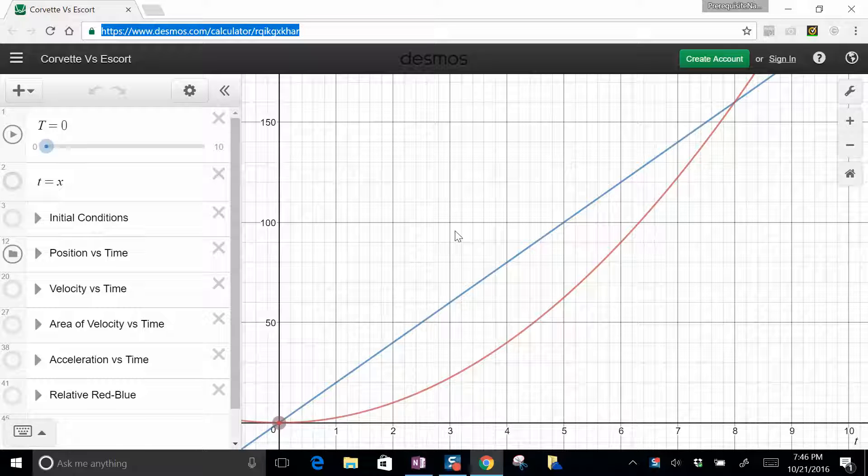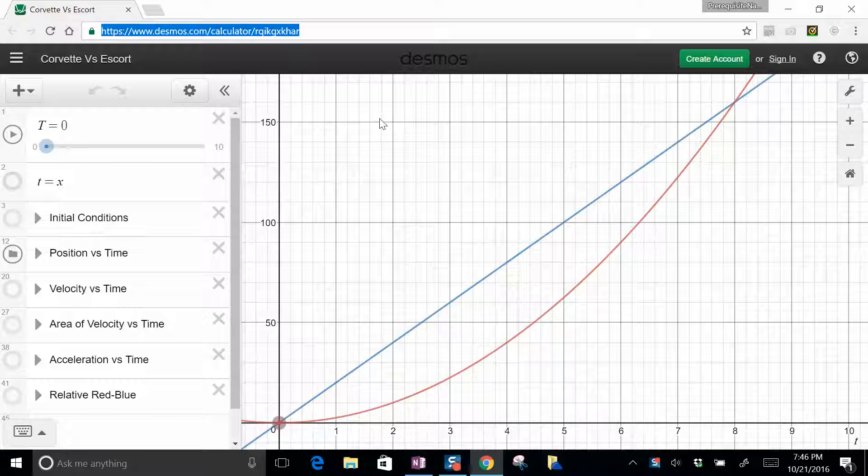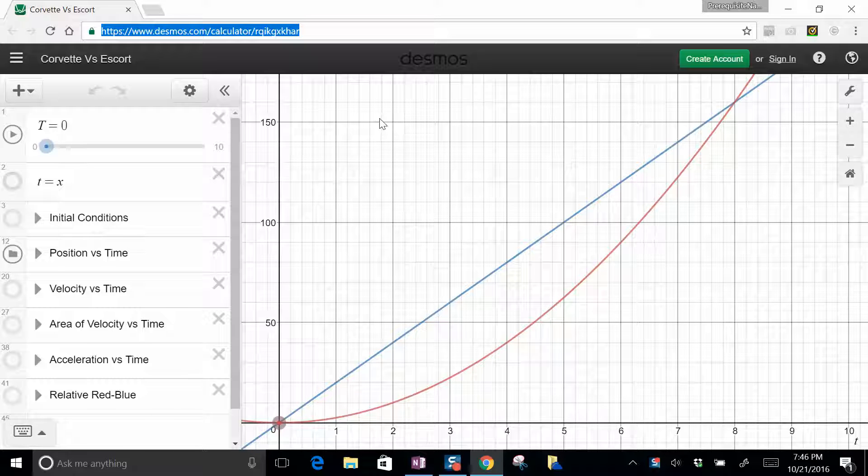I like to call this Desmos simulation I made the Corvette versus the Escort, but it applies to any time you have two objects moving in one dimension. For example, one car overtaking another, or a train leaves station B and goes in one direction, and a train leaves station A, those ones that people always joke about being really hard SAT problems.